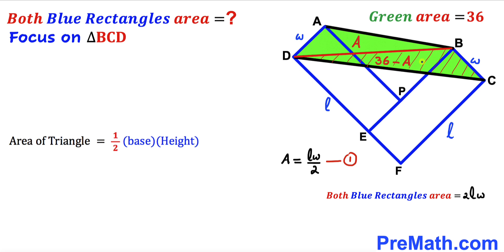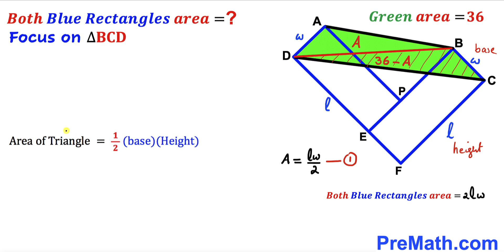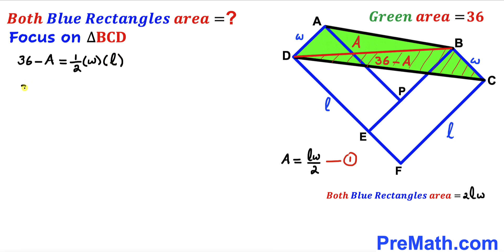Now let's focus on triangle BCD. The base of this triangle is W and the height is the length CF, which is L. The area of this triangle is 36 minus A. Filling in the formula: 36 minus A equals one-half times W times L, which gives us 36 minus A equals LW divided by 2. I'll label this as equation number 2.